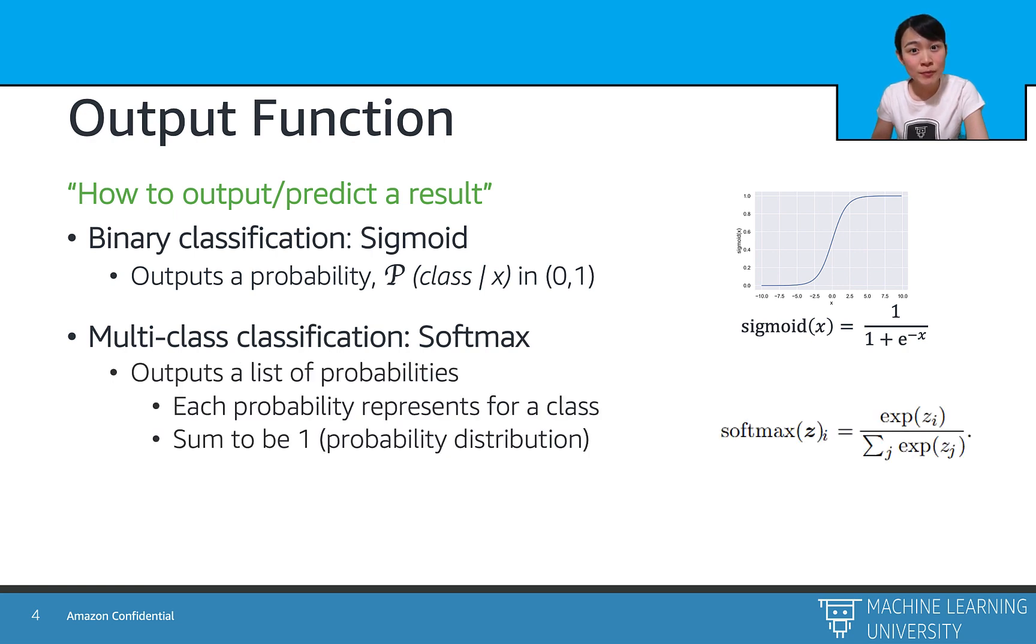If the problem is a multi-class classification, we may use the softmax function as an output function, which I already alluded in the last slide. It basically outputs a list of probabilities, and each probability represents a class. This probability should be summed up to be 1, and we may choose the largest probability represented class in the end.